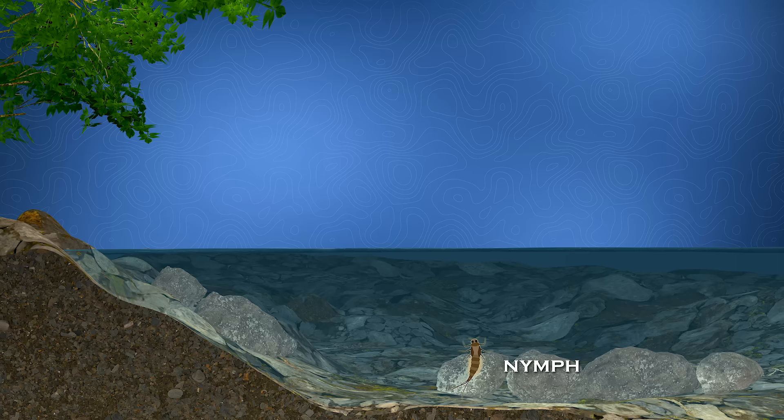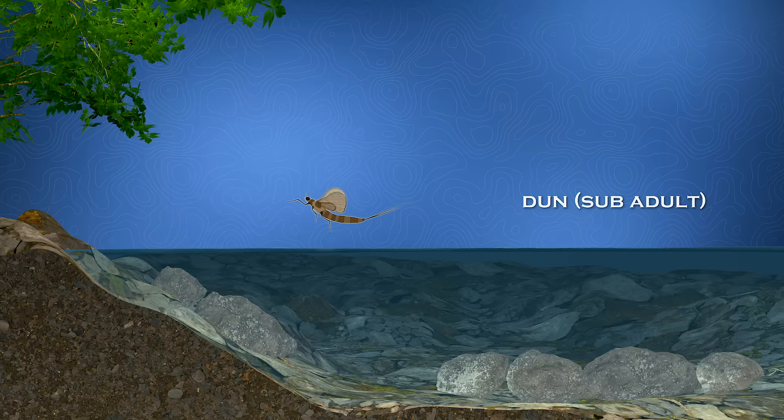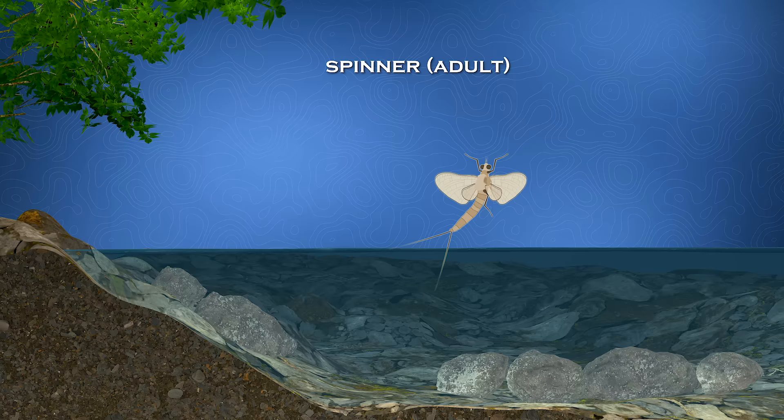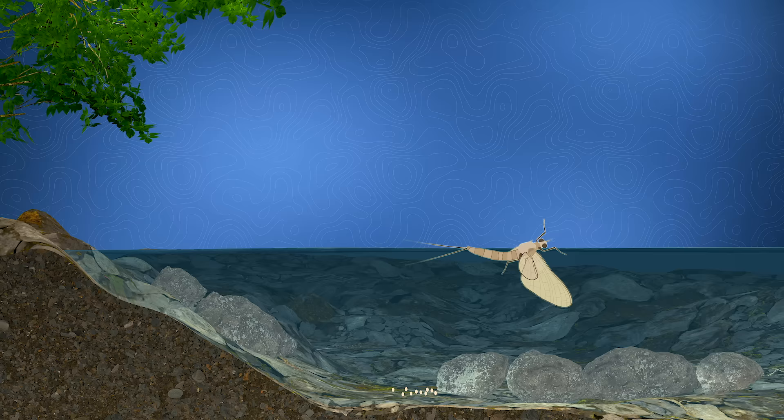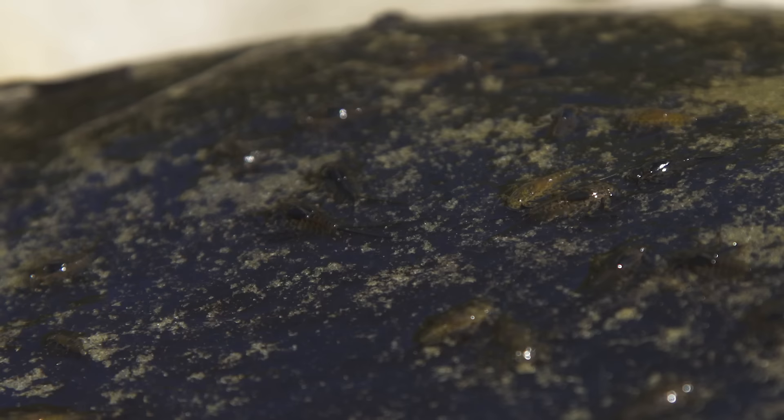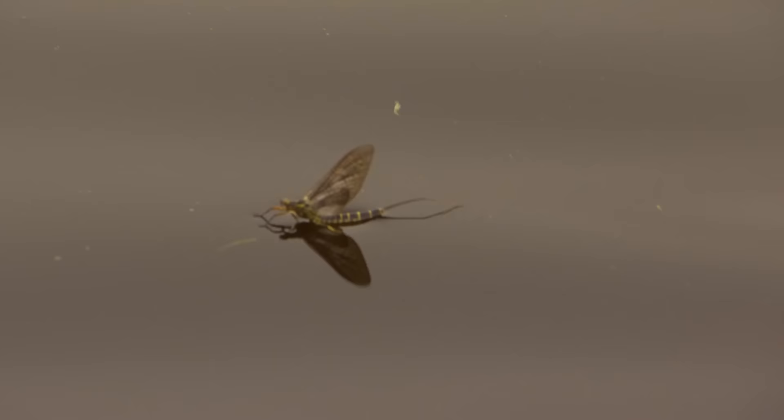Mayflies live as larvae for almost a full year underwater, then rise to the surface to hatch into what we call a dun, or sub-adult. These flies then fly into nearby trees, molt, and turn into the full adult called a spinner in a day or two, which then return to the water and lay their eggs. Trout eat the nymphs throughout the season, but they only have access to the adults when they rise to the surface, flutter on the water after hatching, or return to the river to lay eggs.